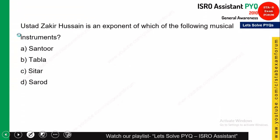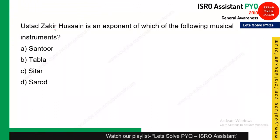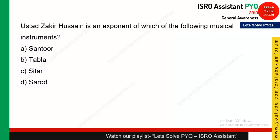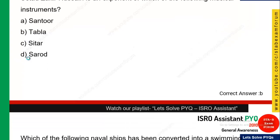The first question asked in that exam is: Ustad Zakir Hussain is an exponent of which of the following musical instruments? This question is very easy. As you know Zakir Hussain — you must have seen him in a Taj ad — he was playing tabla. He is related to the tabla instrument, so the correct answer is tabla. You can relate your general awareness with the happenings around you.